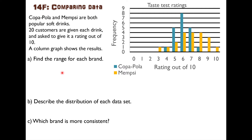Statistics is really useful if you've got two options and you want to compare them to see which is better. For example, if you've got two different drugs and you want to see which is safer or more effective, or if you have two different brands and you want to see which brand is more popular.